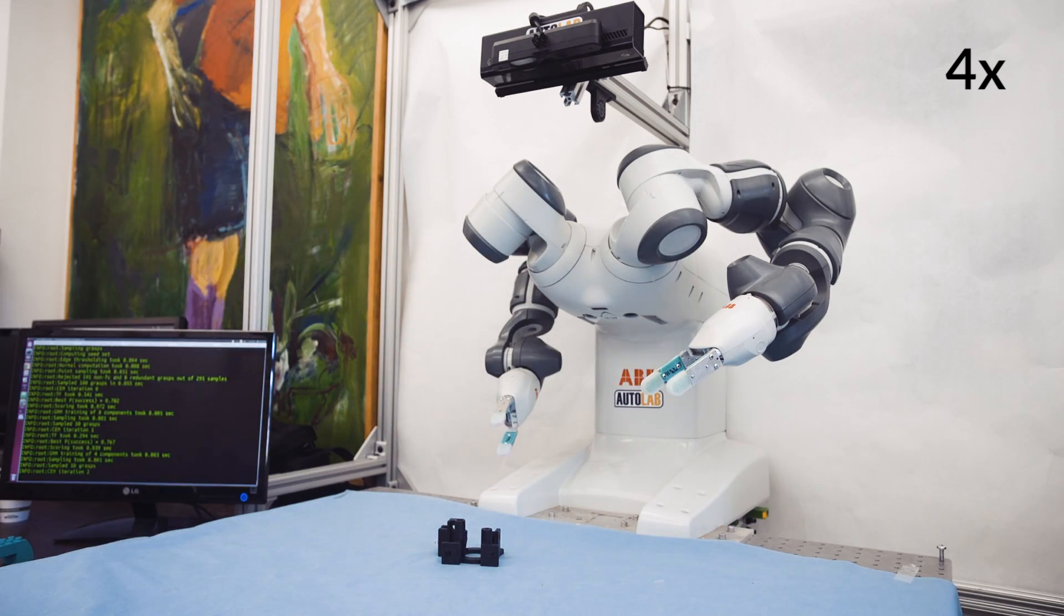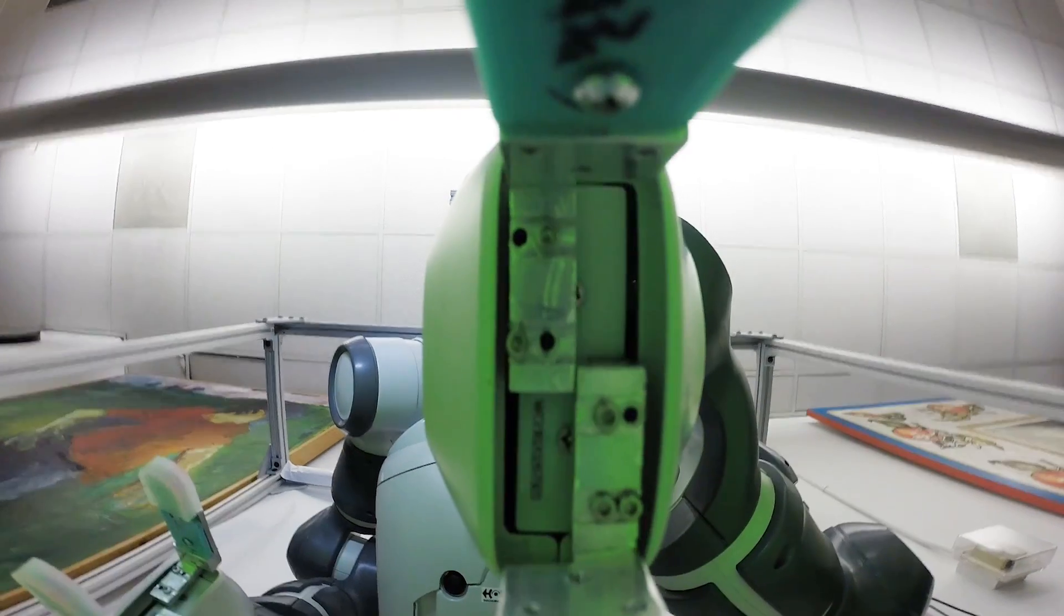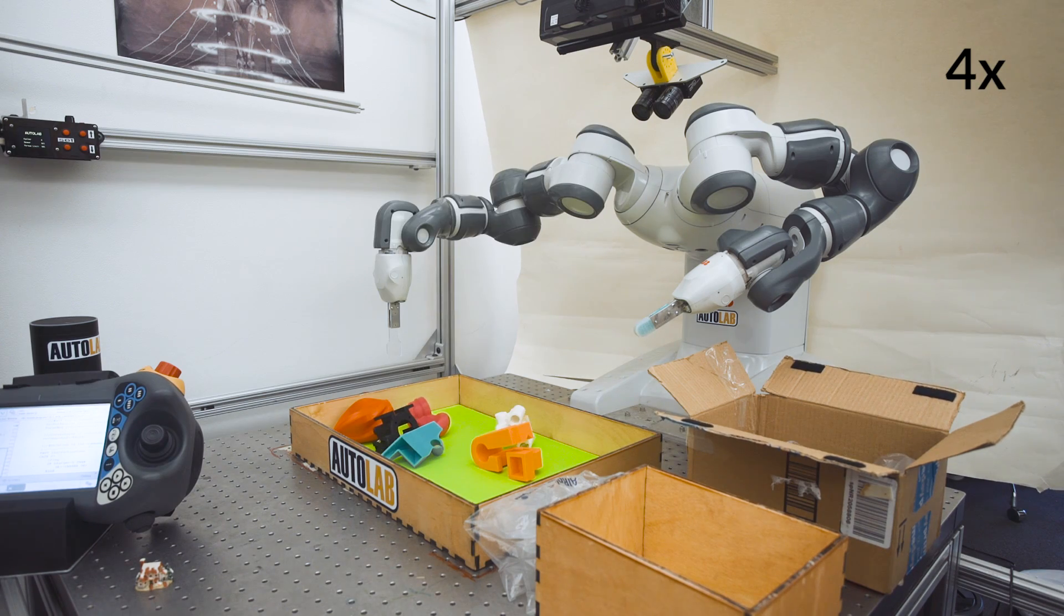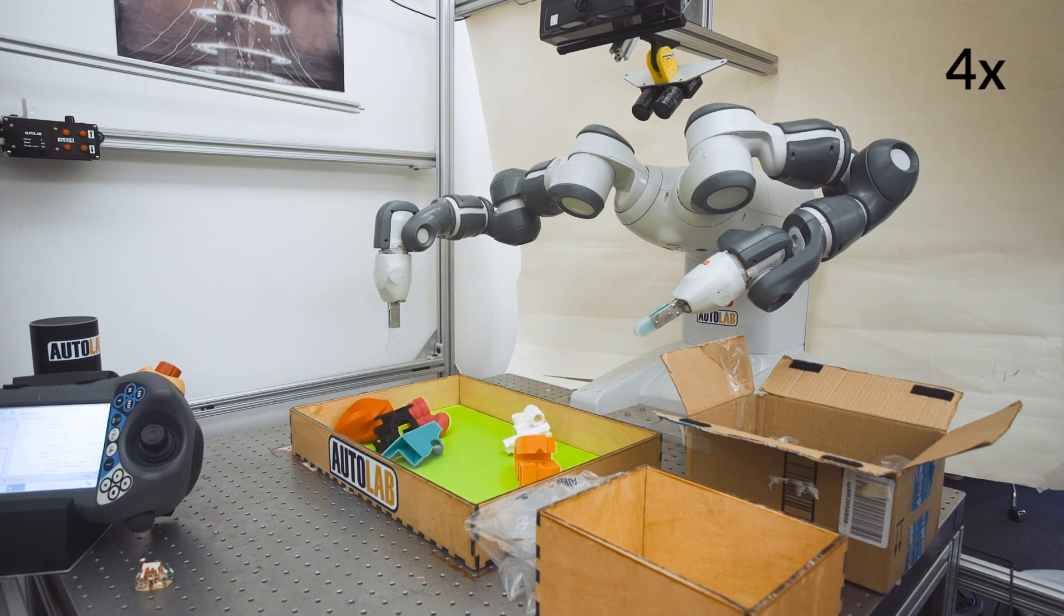DexNet is designed to facilitate grasping adversarial objects with irregular, difficult-to-grasp shapes. The first version of the system, DexNet 1.0,